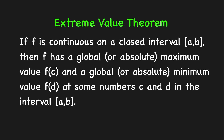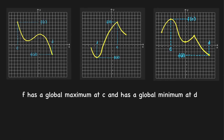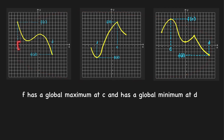Let's look at some graphs of functions that are continuous on a closed interval [a, b]. These three graphs are all continuous on a closed interval [a, b]. All three graphs are continuous because we can trace the curve without lifting our pen from the paper. The Extreme Value Theorem assures us that these functions attain a global maximum and global minimum on the closed interval [a, b].